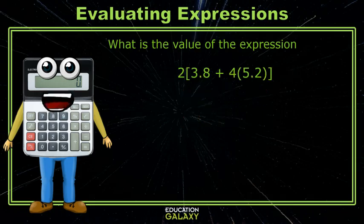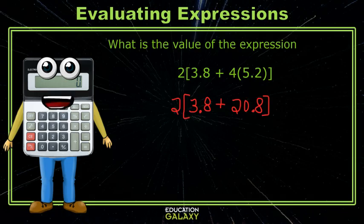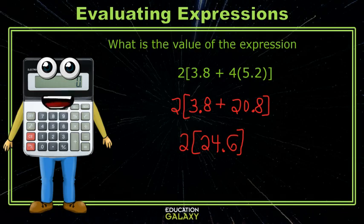Let's try this next one. First, we want to look inside the brackets to the parentheses. 4 times 5 and 2 tenths gives us 20 and 8 tenths. Next, we need to finish the brackets by adding 3 and 8 tenths and 20 and 8 tenths, resulting in 24 and 6 tenths. Last, we need to multiply by 2. We get an answer of 49 and 2 tenths.